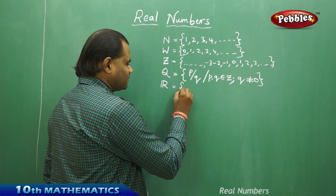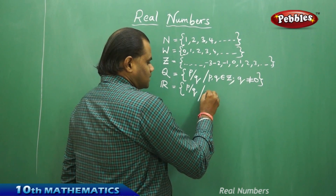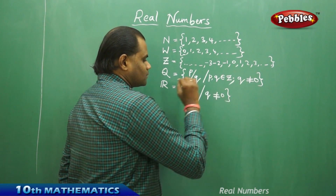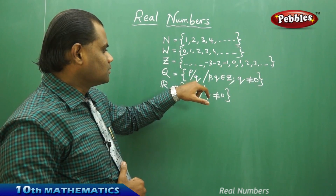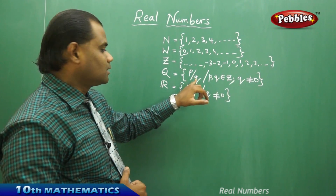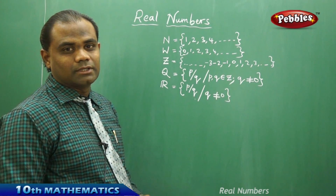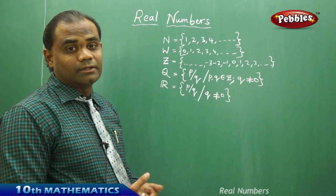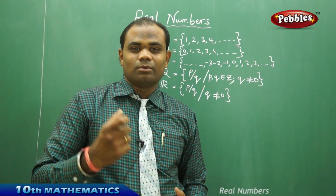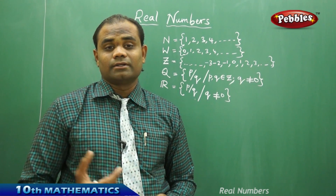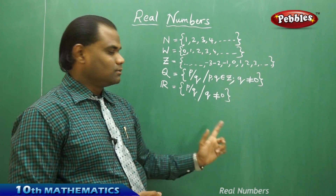Real numbers are also given in the form P by Q such that Q is not equal to 0. The difference between rational numbers and real numbers is that rational numbers require both P and Q to be integers, whereas for real numbers, P and Q need not be integers — they can be any numbers. In both cases, Q should not equal 0, because any number with a denominator of 0 is undefined.